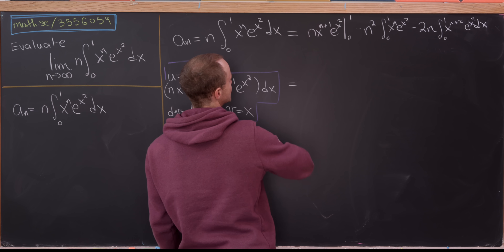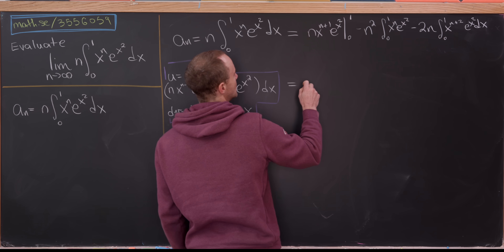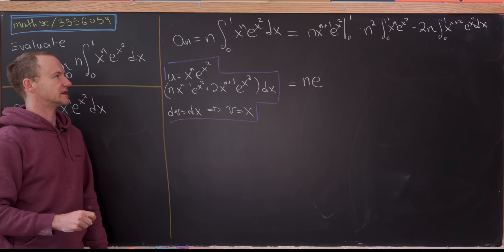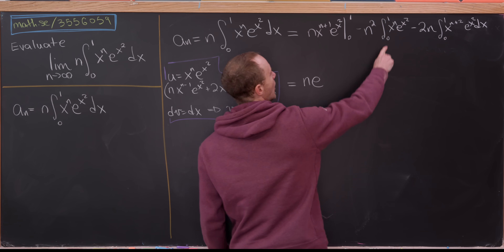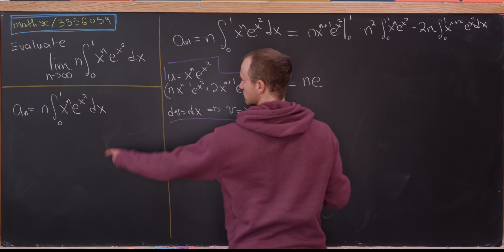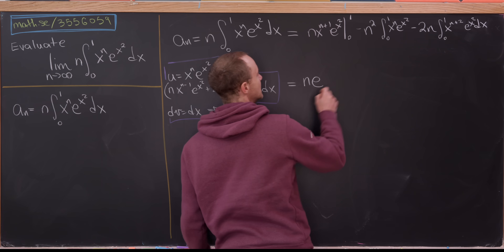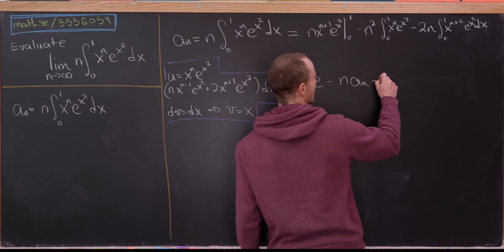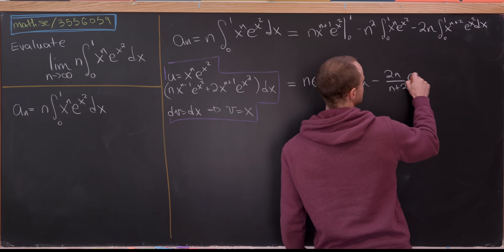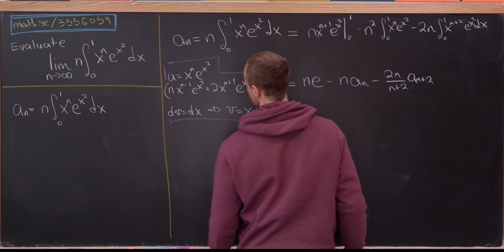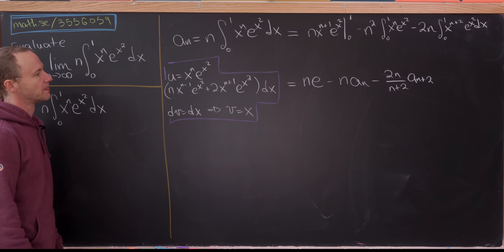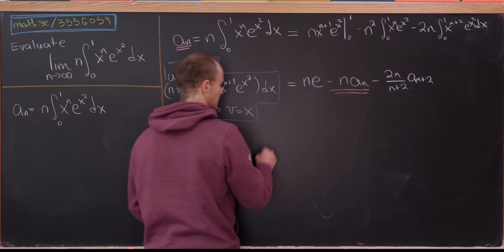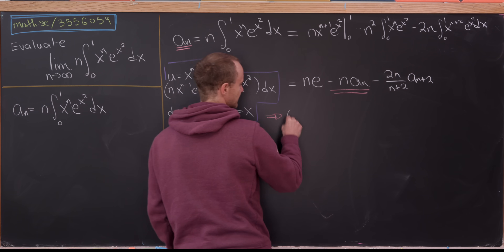Evaluating the boundary term: at x equals 1 we get n times e, and at x equals 0 we get 0. Now observe that this integral is almost equal to our original expression. We have n squared here versus n, so that term is simply n times a sub n. And the last integral gives minus 2n over n plus 2 times a sub n plus 2, using a similar observation.